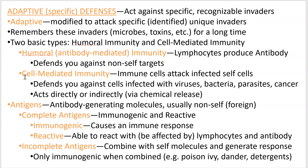Cell-mediated immunity is where the cells themselves attack. This is critical: humoral immunity uses antibodies found in your humors, while cell-mediated means the cells do the job. You have T cells that directly attack your cells to defend against things inside of them — viruses, bacteria, parasites, cancer — and they also produce a lot of chemicals.